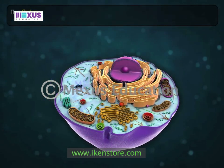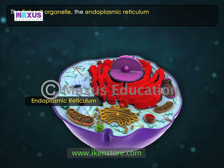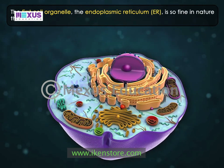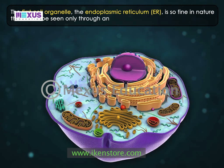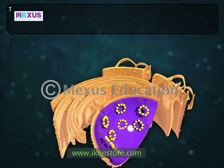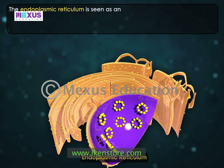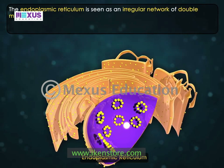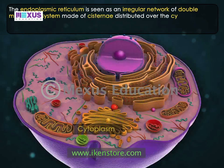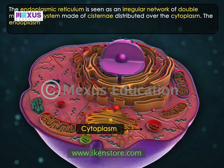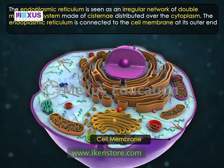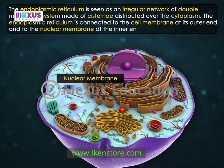The first cell organelle, the endoplasmic reticulum (ER), is so fine in nature that it can be seen only through an electron microscope. The endoplasmic reticulum is seen as an irregular network of double membrane system made of cisternae distributed over the cytoplasm. The endoplasmic reticulum is connected to the cell membrane at its outer end and to the nuclear membrane at the inner end.